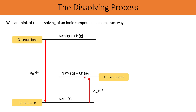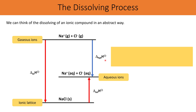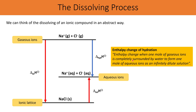But we could also envisage a different route. If you go from gaseous ions straight to the ionic compound that's a lattice enthalpy, and then the ionic compound undergoes the enthalpy change of solution to reach aqueous ions. Alternatively you could go directly from gaseous ions to aqueous ions — this is called the enthalpy change of hydration, defined as the enthalpy change when one mole of gaseous ions is completely surrounded by water to form one mole of aqueous ions as an infinitely dilute solution.